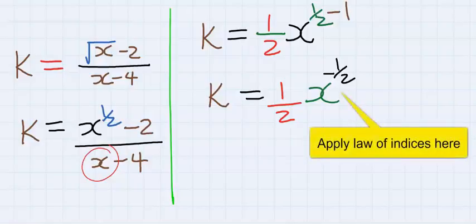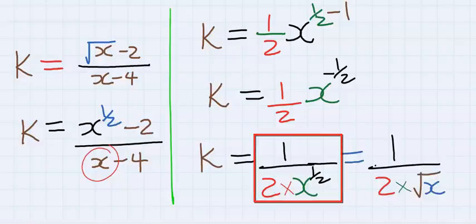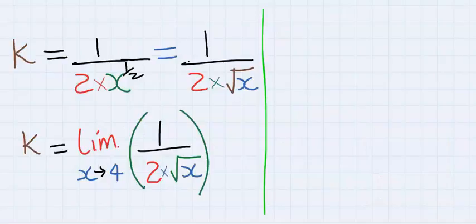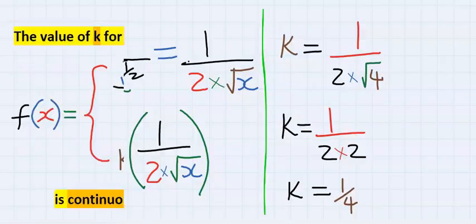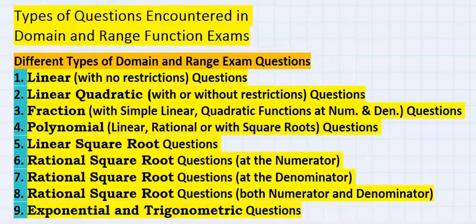This can be rewritten as this, and also can be rewritten as this, and we can further rewrite it as this. Next, take the limit and you can see we got 1 over 4, just as before. Our answer is d.